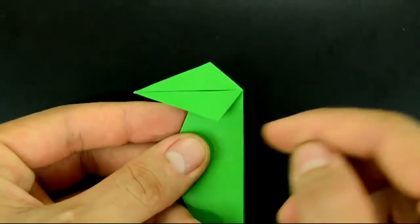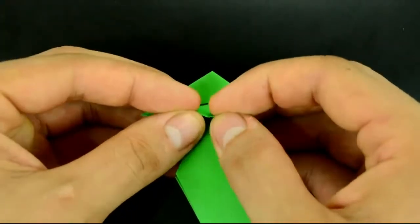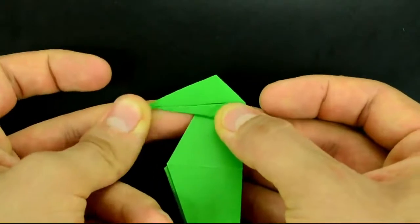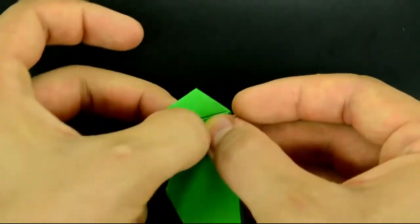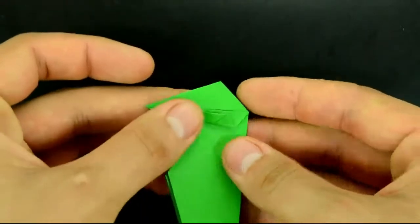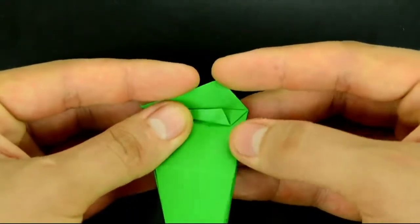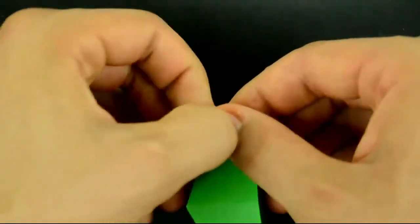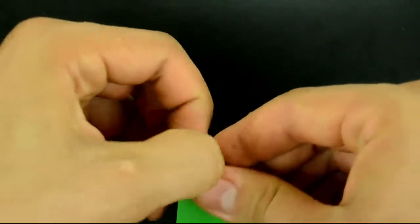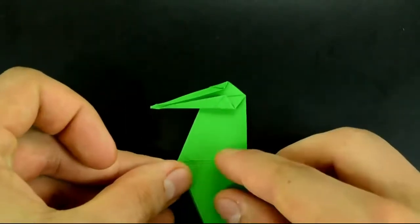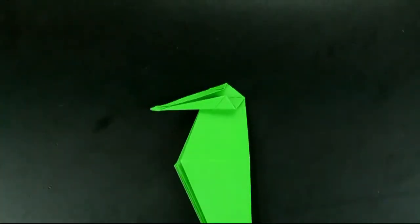And fold this diagonal edge to the middle. Repeat the same on the top. And here, a little attention. To make it easier, I'll use a barbecue stick.